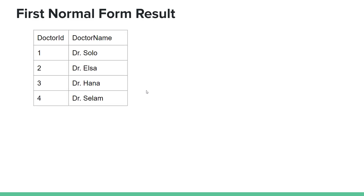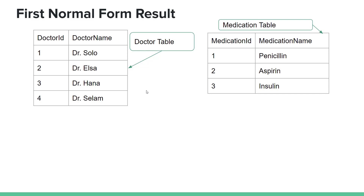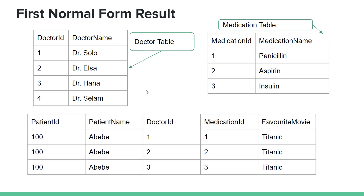The result is that the doctor has a table. The doctor ID is a primary key. The medication ID is a primary key. The doctor ID and medication ID replace repeating groups. Medication one to three are substituted with a medication ID.